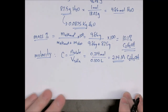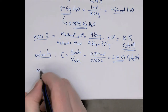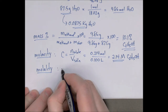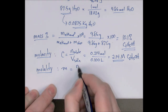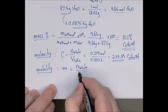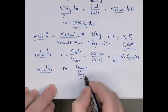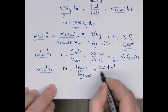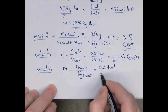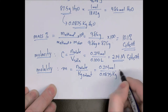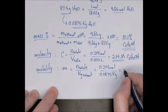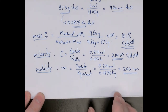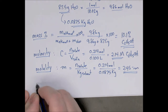For molality, we use a lowercase script m. Molality equals moles of solute divided by kilograms of solvent — not the solution, but the solvent. We have 0.214 moles of ethanol and 0.0875 kilograms of water. Dividing gives 2.45 molal, or 2.45 moles per kilogram.